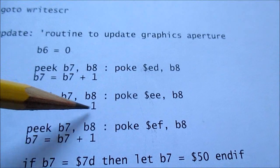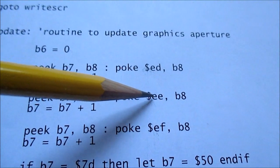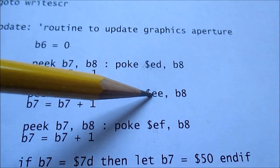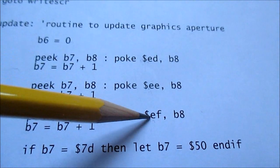Then I increment that so I get the next column location, or next column data, and put it into the next area of the graphics aperture. That holds the second column.